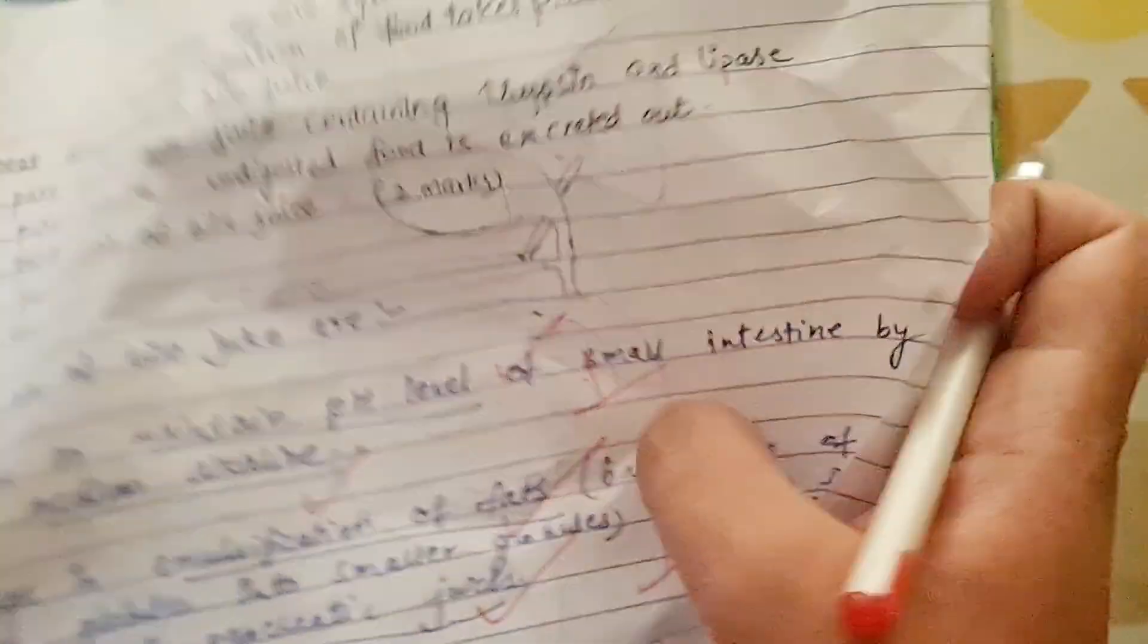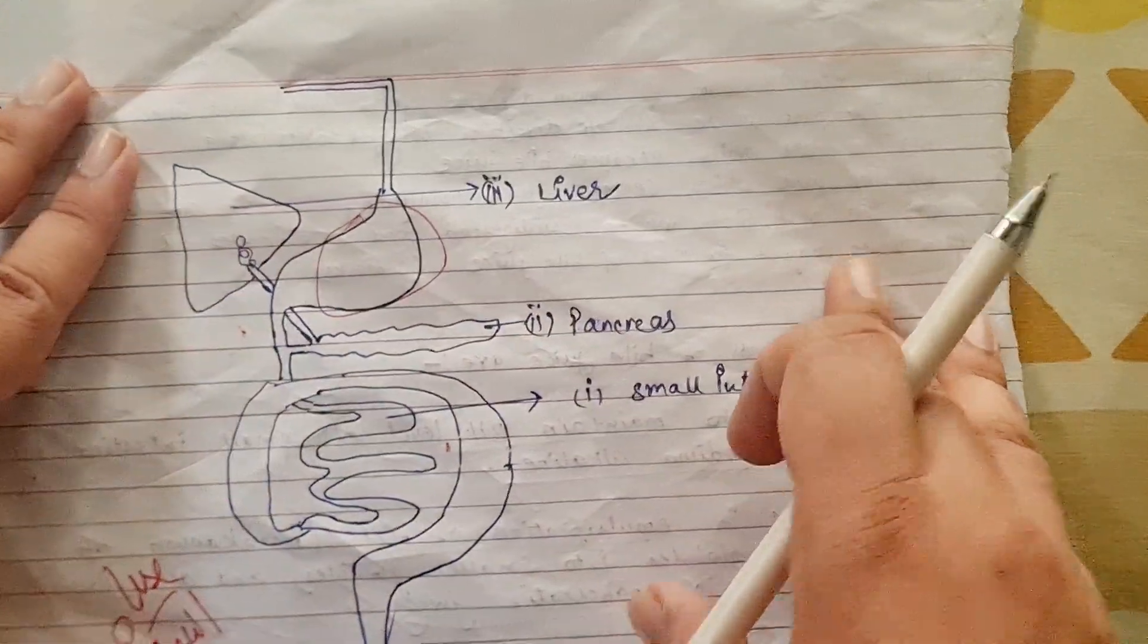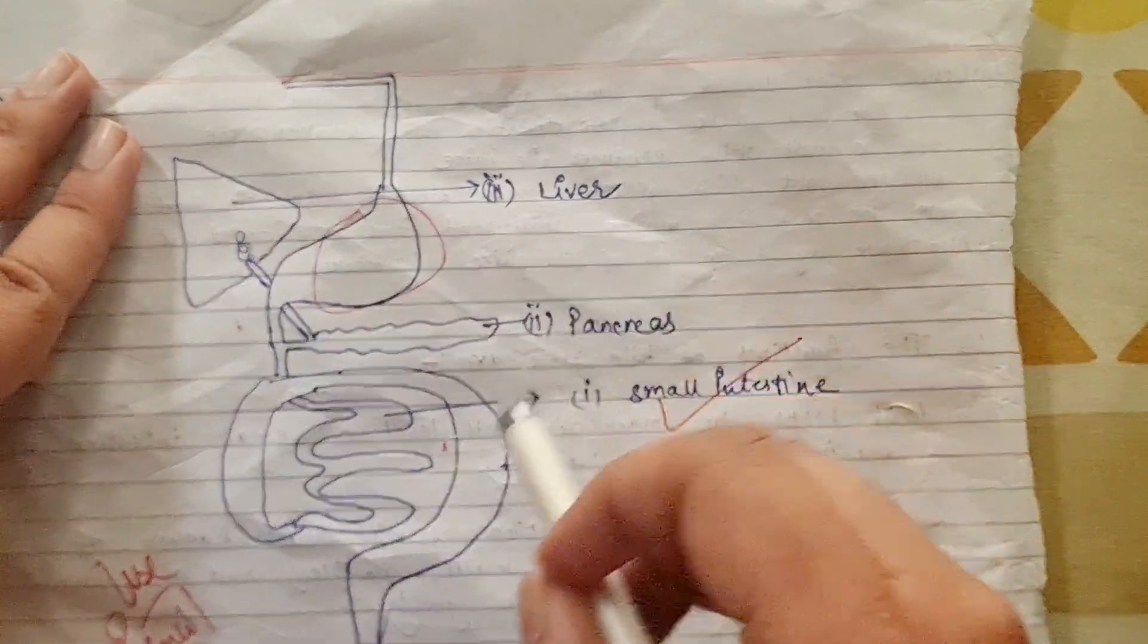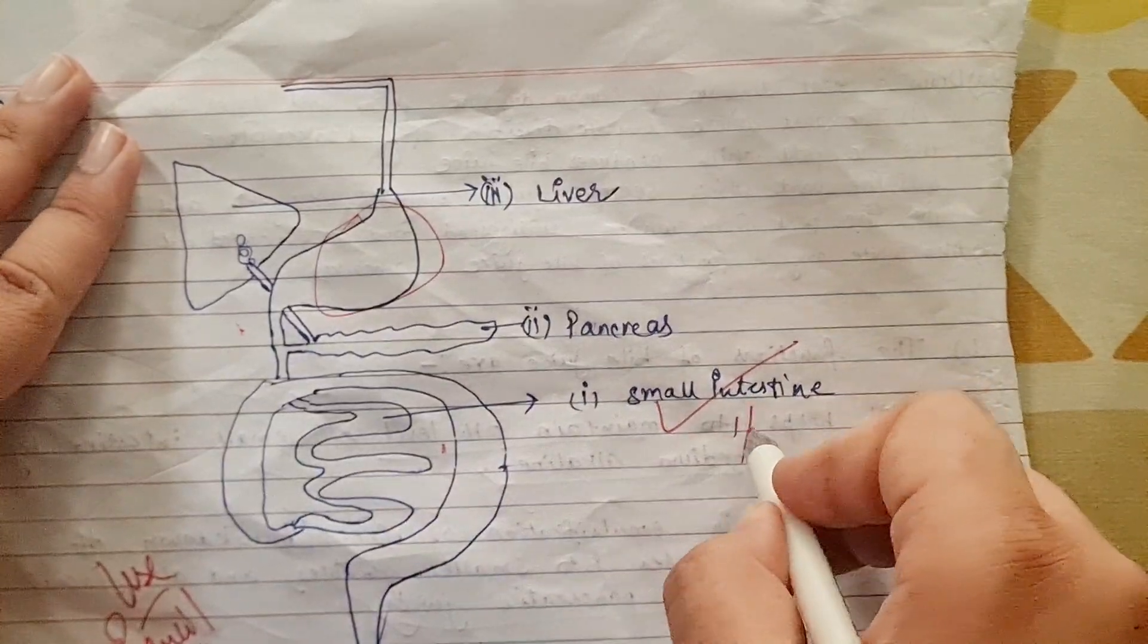The first part asks what is the part where complete digestion of food takes place. That is small intestine. The student has really highlighted this, so if I talk about it, half mark will be given.